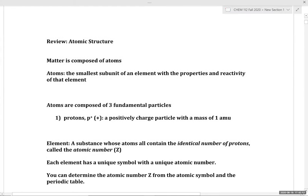Let's talk about atomic structure — the structure and composition of an atom. From our Chem 101 perspective, we know that matter is composed of atoms, where an atom is the smallest subunit of an element with the properties and reactivity of that element. We can take an atom, such as a carbon atom, and look at its component subatomic particles.